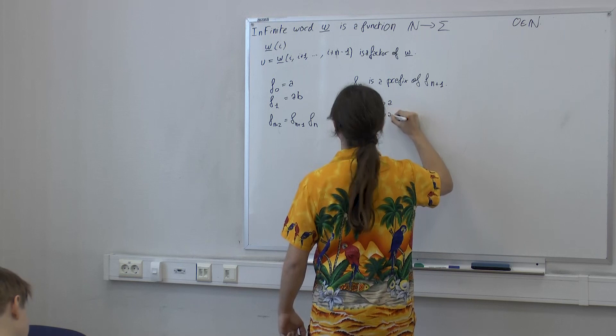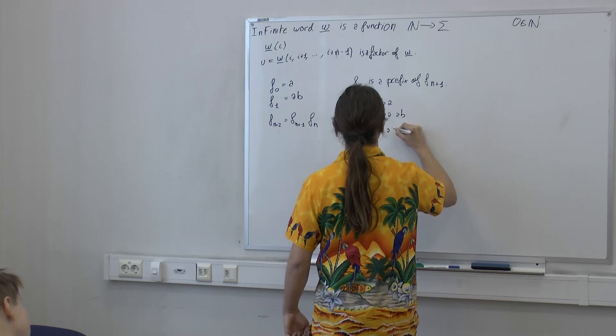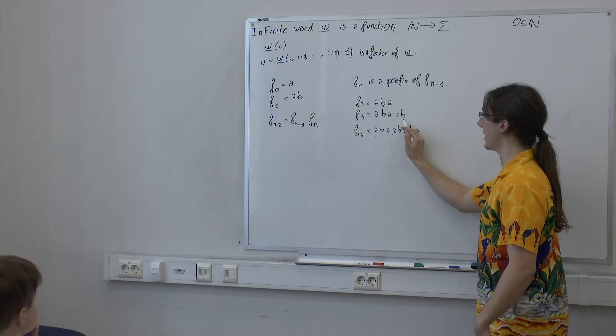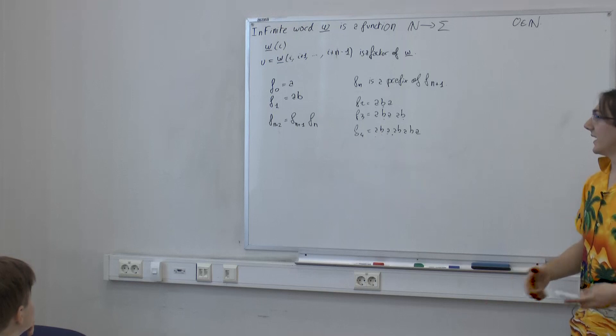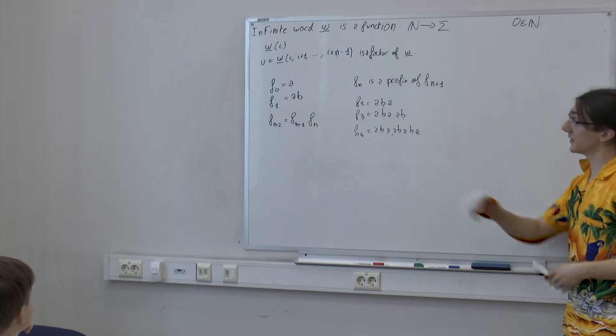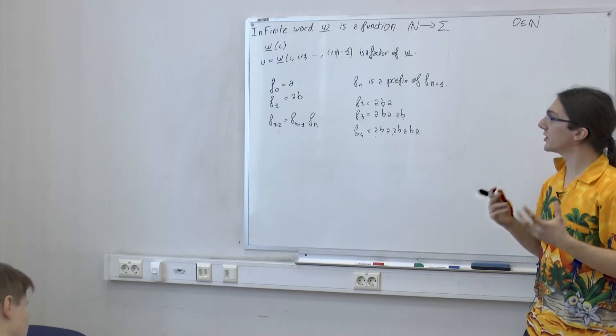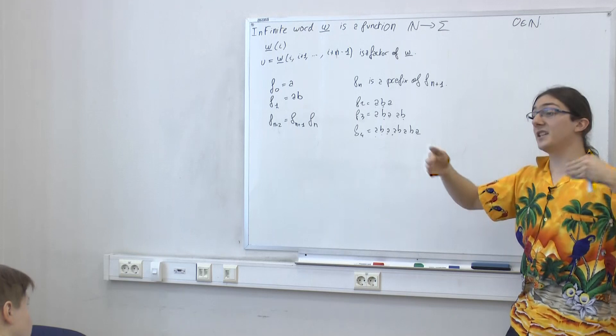Here you will have an a everywhere, a b everywhere, an a everywhere, and so on. Once a letter appears, it never changes. Therefore it makes sense — you can define it formally with a diagonal argument — to talk about the infinite word you get at the limit. We can just accept that if we have a sequence of words like this that extend each other and grow in length, this will converge to an infinite word.